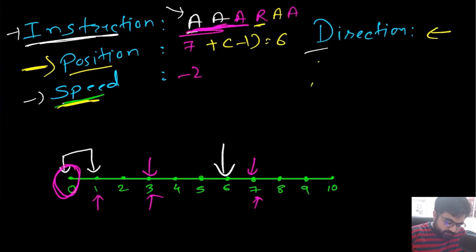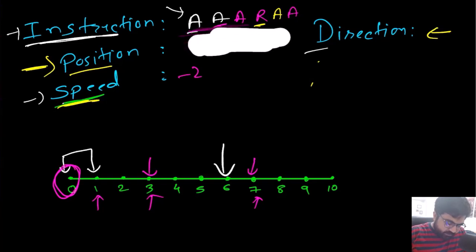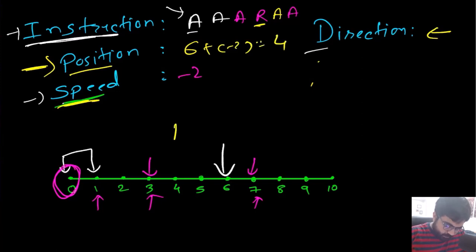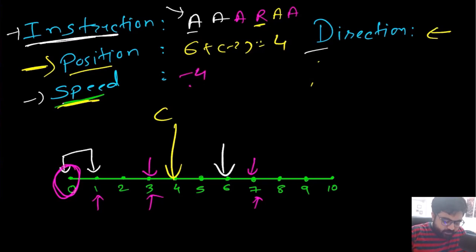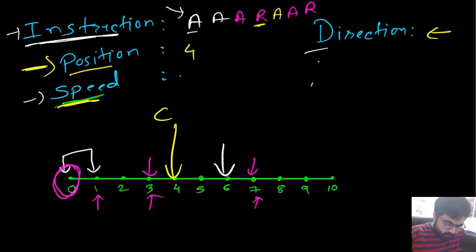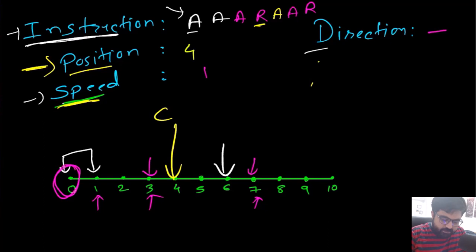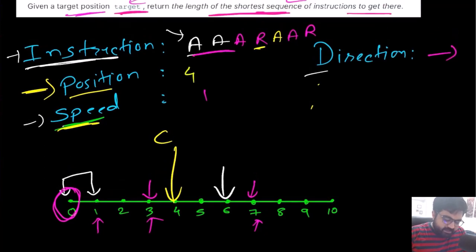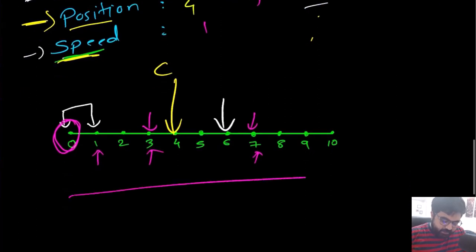Adding one more accelerate gives position six plus (−2) = four, with speed becoming minus four. If we add a reverse here, the position stays at four but the speed, which was negative, becomes plus one, so the car now moves rightward again. This is the full logic of the accelerate and reverse instructions.